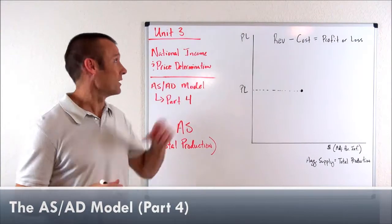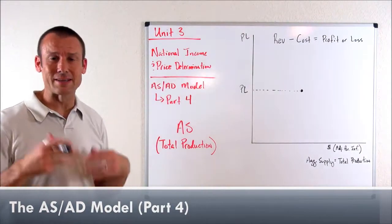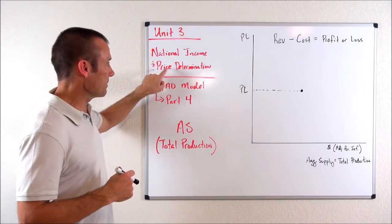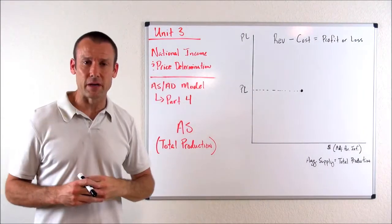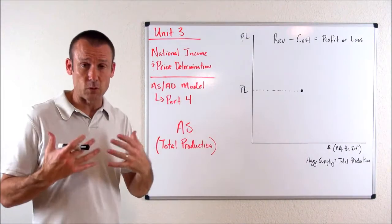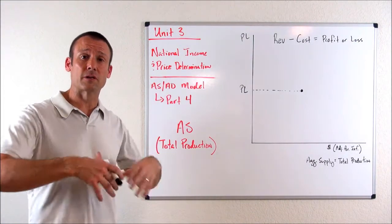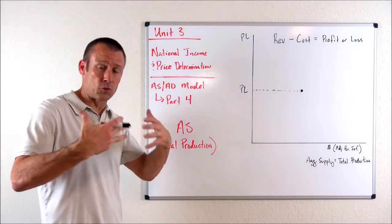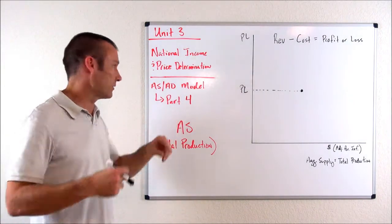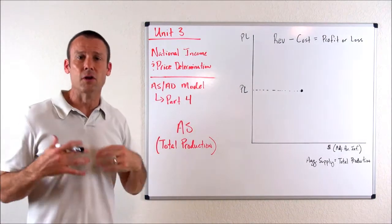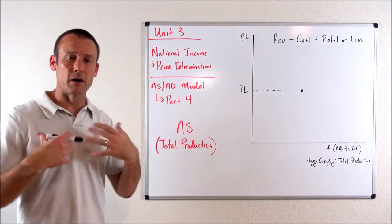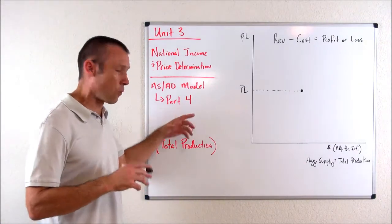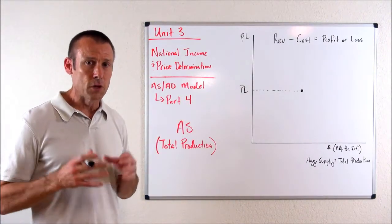Hey everybody, welcome back. We're on Unit 3. The title of Unit 3 is National Income and Price Determination. The way that we are focusing on national income and price determination, the vehicle we're using is the AS-AD model. We're trying to understand the AS-AD model, and this is Part 4, where we're switching to aggregate supply.